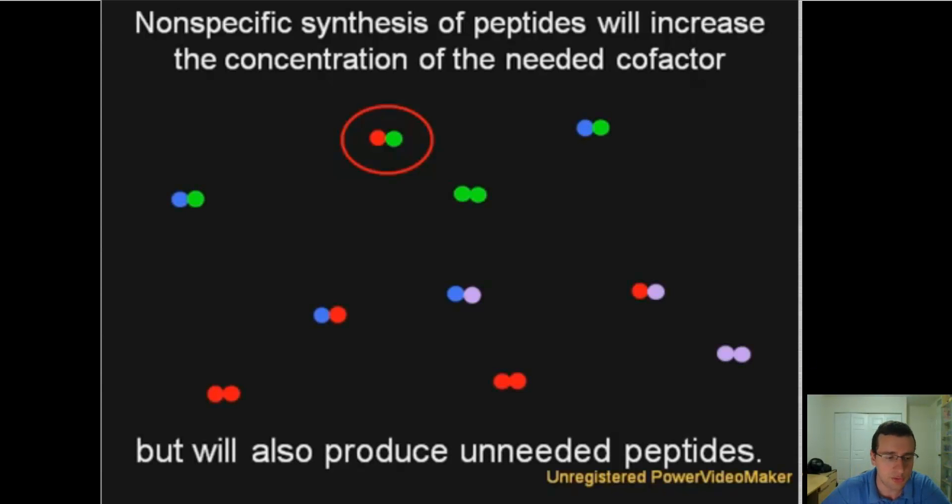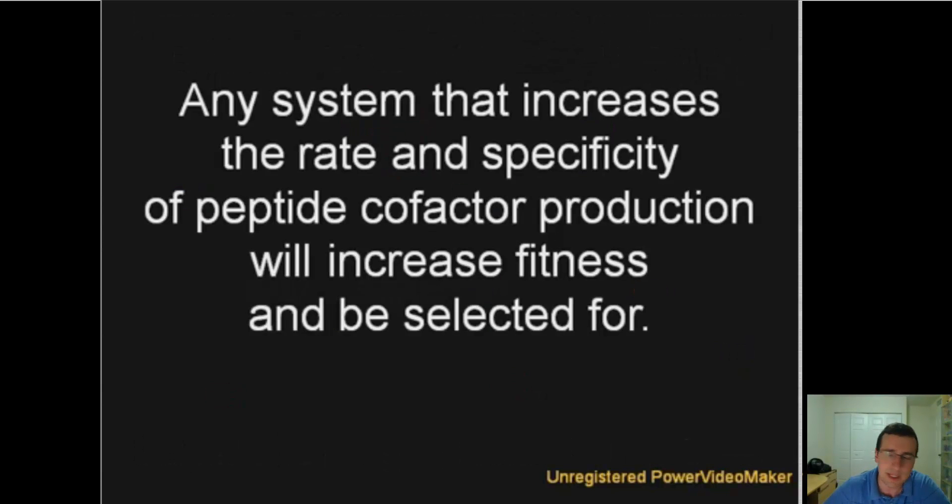But unfortunately, it would also create many unneeded peptides. So what you need now is the evolution of a system that will enhance the efficiency of this. It would increase the rate of formation of specific peptide cofactors, or the cofactors needed for the functions necessary for the cell.